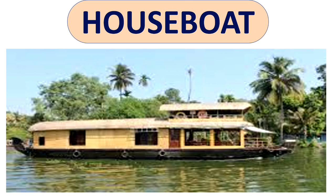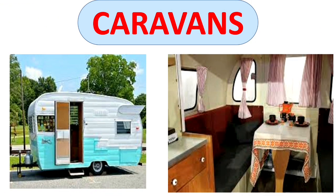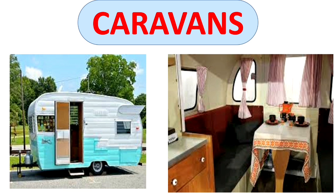Next is houseboat — it means a house on a boat. Next is caravans. Caravans are houses that are on wheels. Caravans also contain a bed and cooking equipment so that people can spend their holidays.